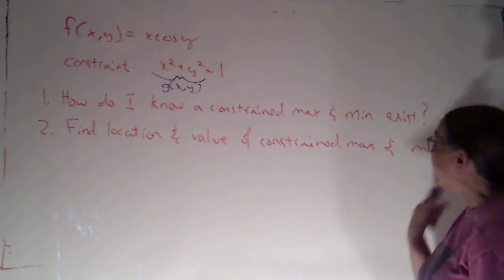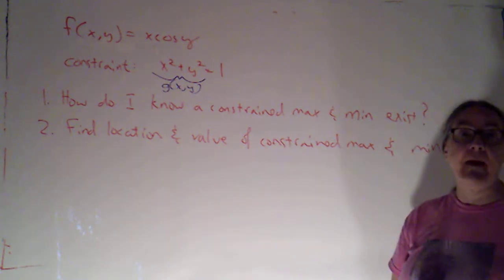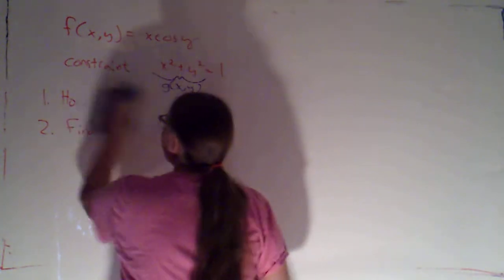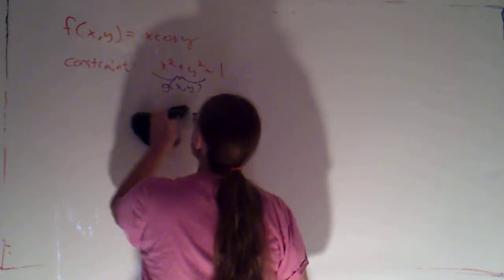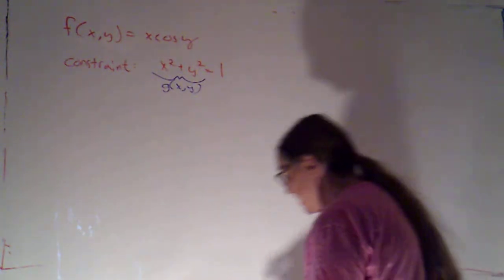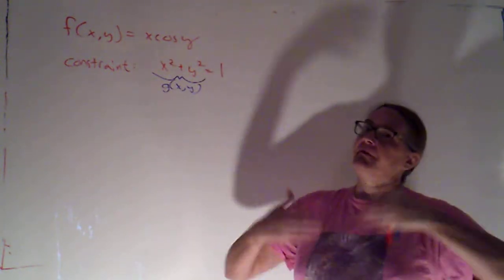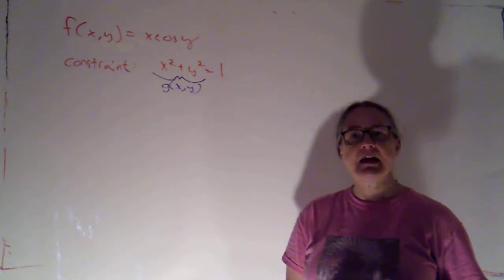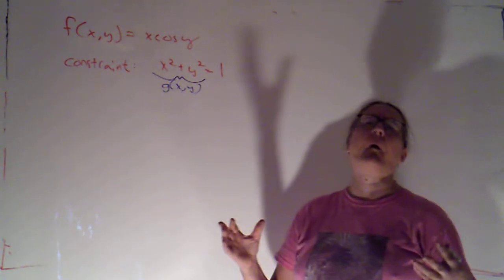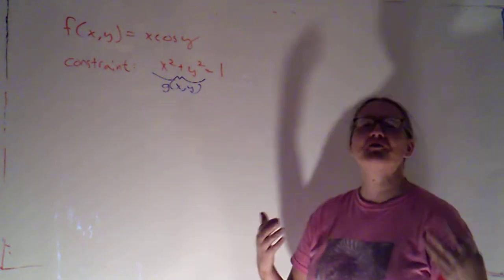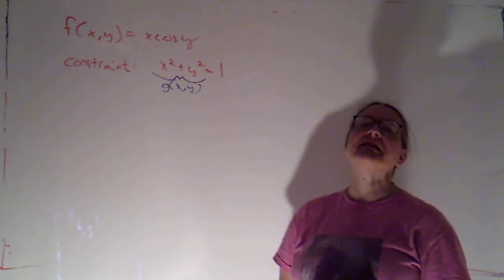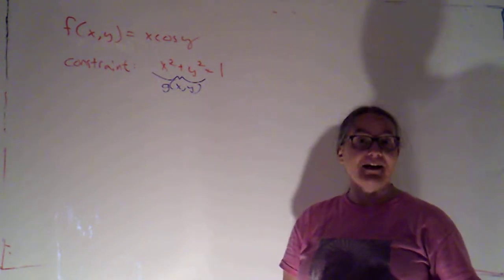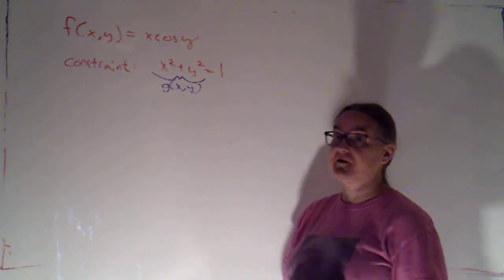We're asked to find the location and the value of the constrained max and min. This section is all about trying to figure out how to use the method called Lagrange multipliers to do just that. I haven't yet taught you how that works. What I'm going to do is use this as a motivating example and just explore to see if we can figure something out — something that will suggest the technique we will formalize as Lagrange multipliers.